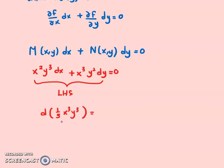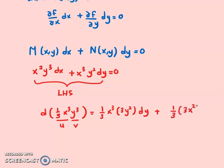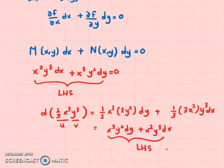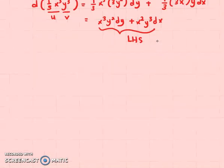Taking the derivative with respect to x and y, you can see that this is a product rule. So we have u = (1/3)x³ and v. Taking dv/dy gives 3y² dy, and taking the derivative with respect to x gives 3x²y³ dx. Simplifying this gives x³y² dy plus x²y³ dx, which is exactly the same as the left-hand side. Therefore we say this equation is exact.